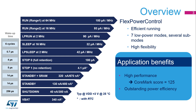Run mode can support a system clock running at up to 64 MHz with only 100 microamps per MHz. At 16 MHz the consumption is even lower, at 93 microamps per MHz.